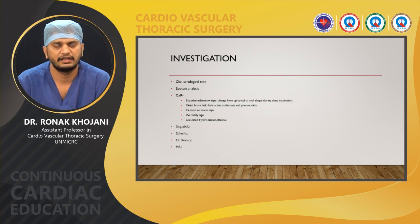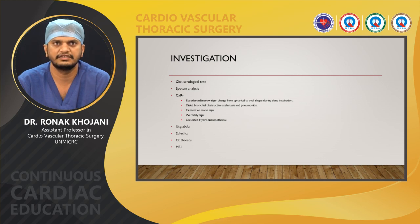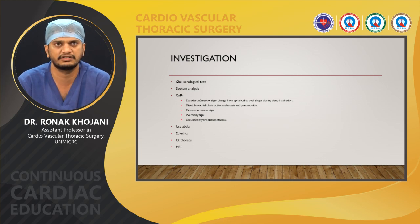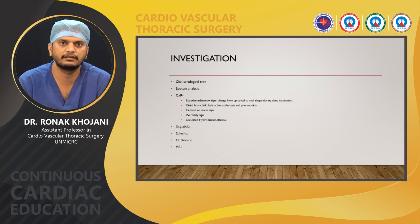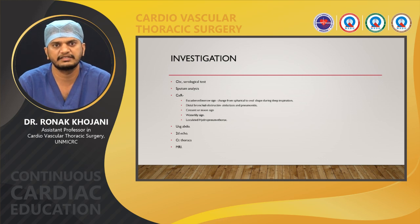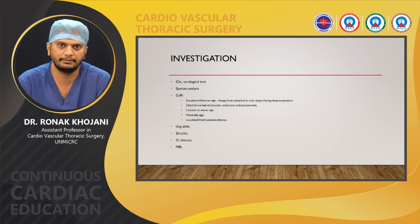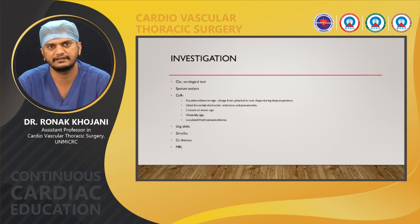For investigation, we can diagnose by various methods. CT thorax is the gold standard for diagnosis of hydatid cysts. On CBC we may see eosinophilia. Serology includes a test for IgM, and sputum analysis can identify daughter cysts. On chest X-ray we can see various signs like the water lily sign, crescent or meniscus sign, and the Squideron Emelio sign. Hydatid cysts are generally spherical in shape and during inspiration may take an oval shape. Ultrasound abdomen is diagnostic for peritoneal hydatid cysts, most commonly in the liver. 2D echo is used for mediastinal and pericardial hydatid cysts. CT thorax is the gold standard for lung and mediastinal hydatid cysts.